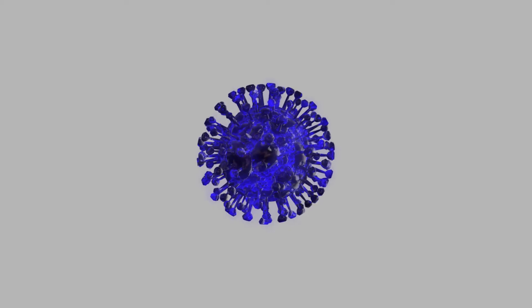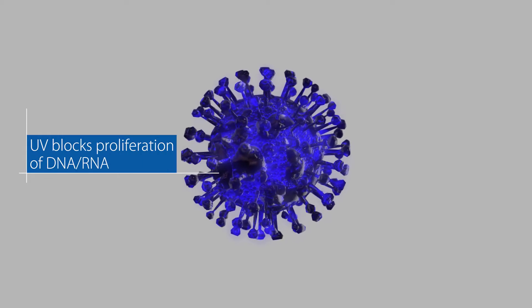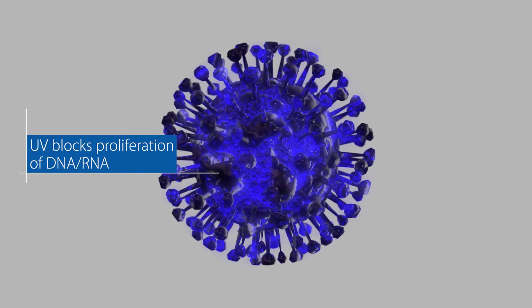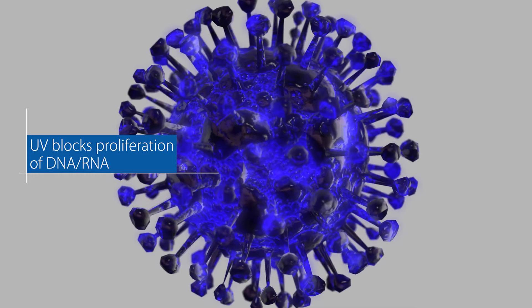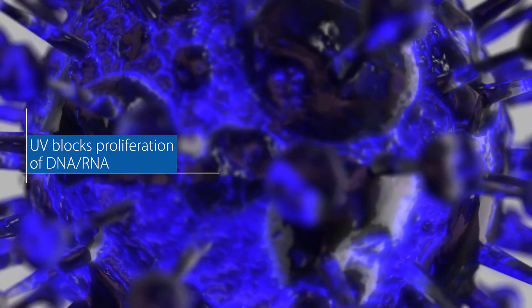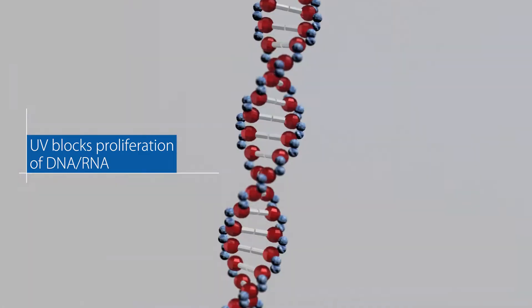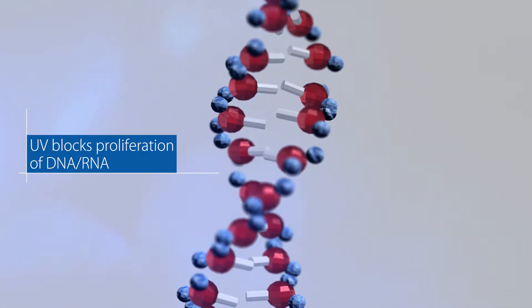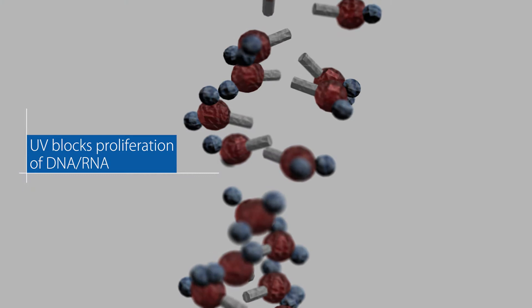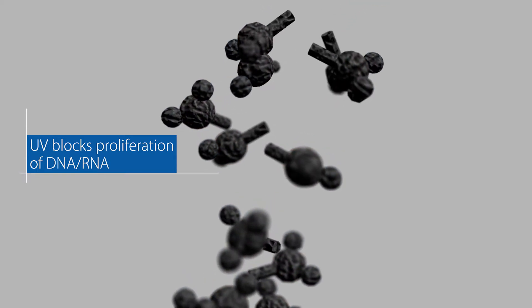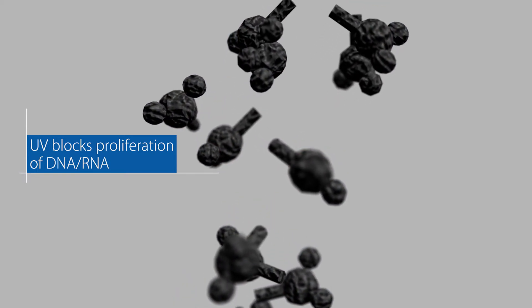UV light acts directly on the DNA and RNA of viruses and bacteria and alters their structure. When DNA or RNA absorbs UV light, it loses its ability to make copies and is no longer capable of proliferation. In this way, the risk of infection can be reduced.